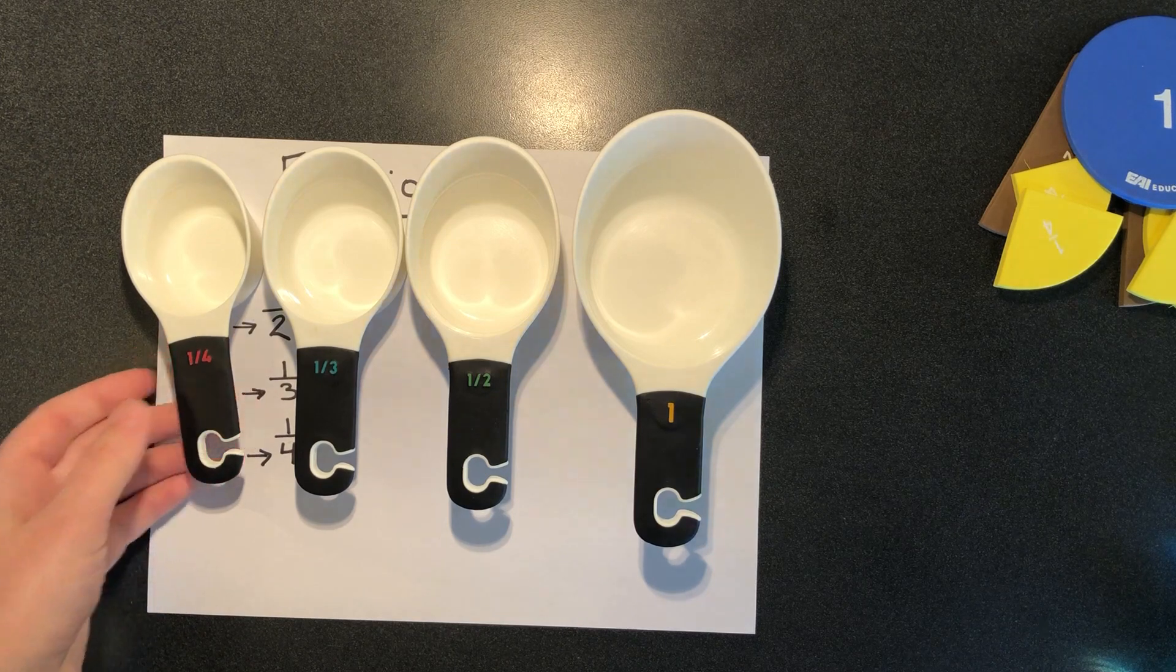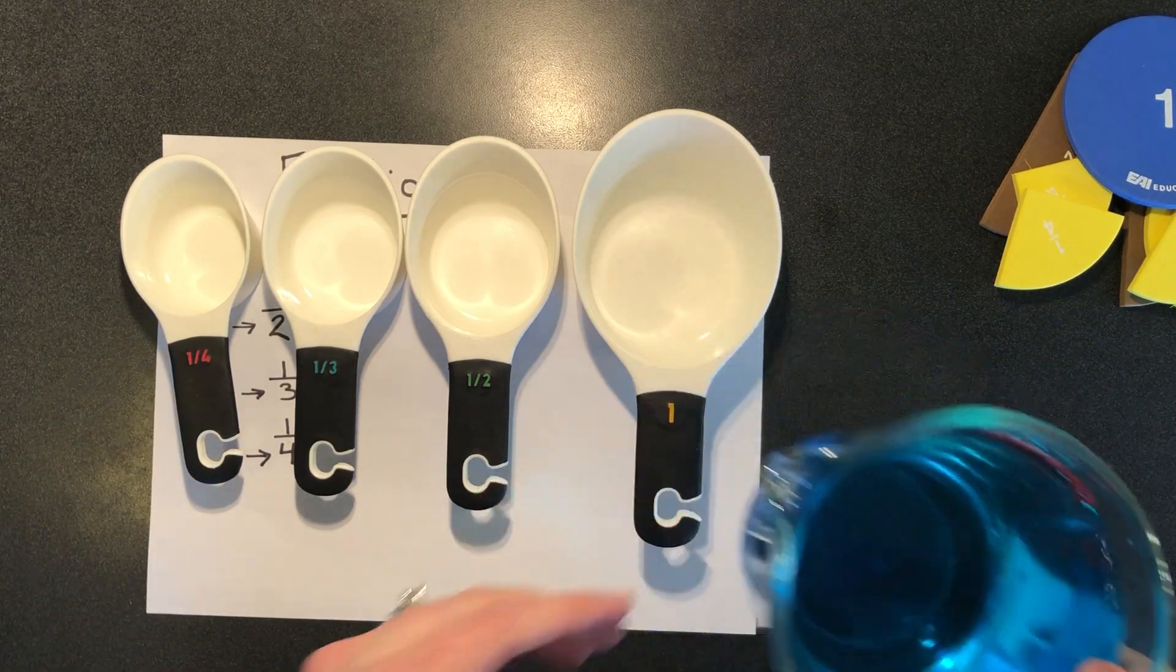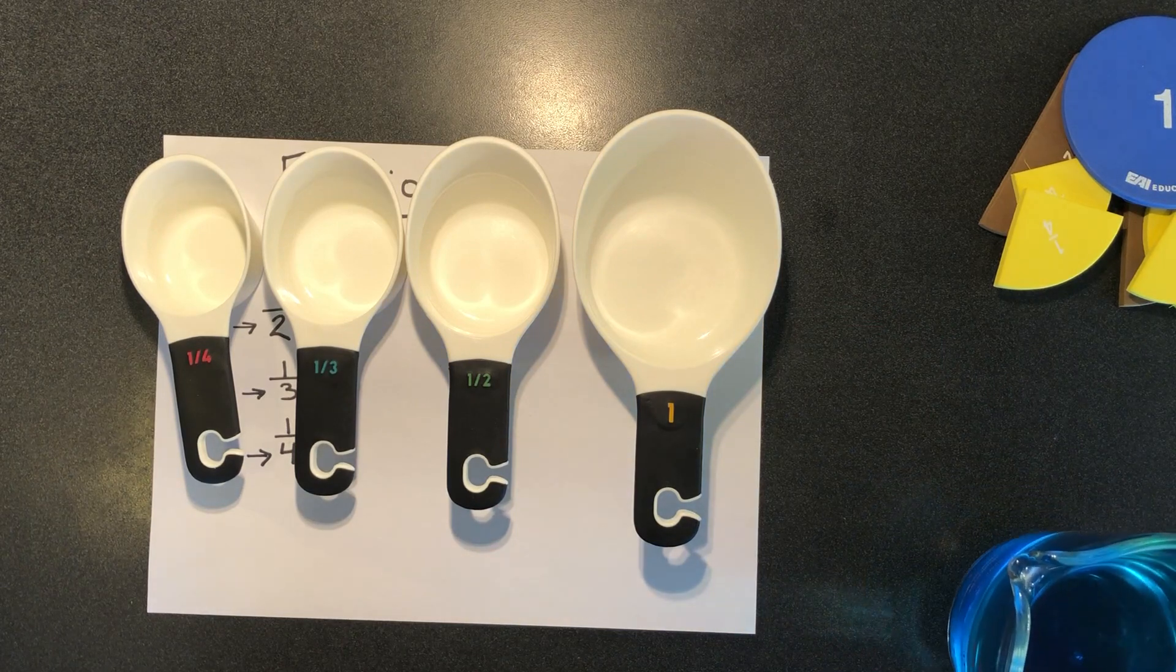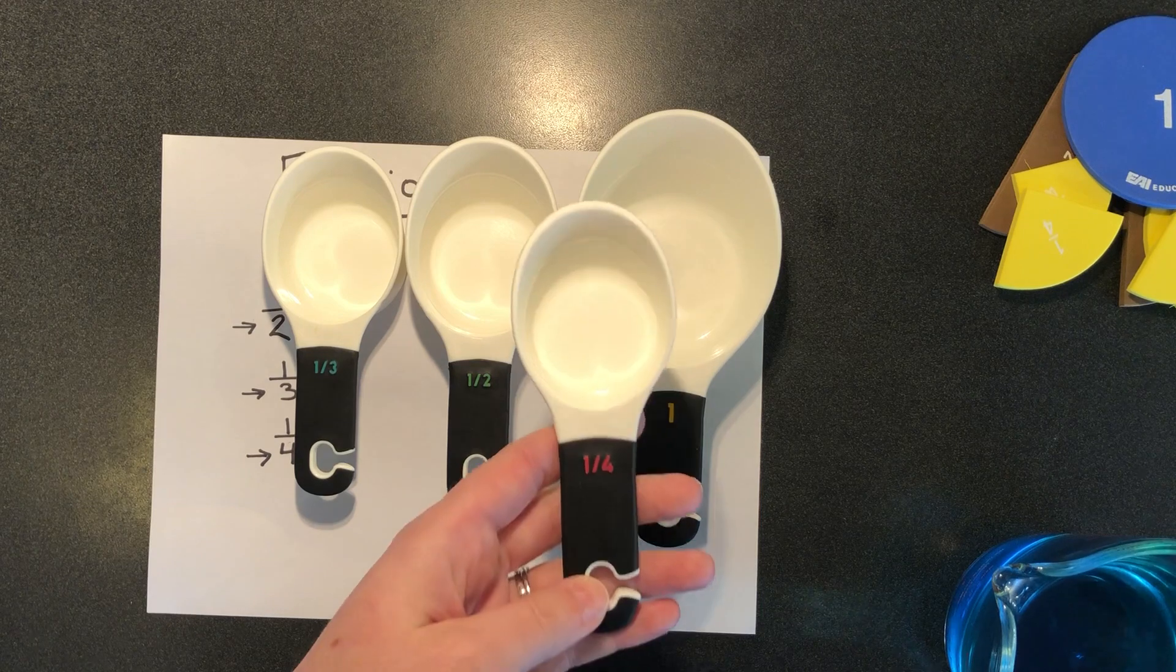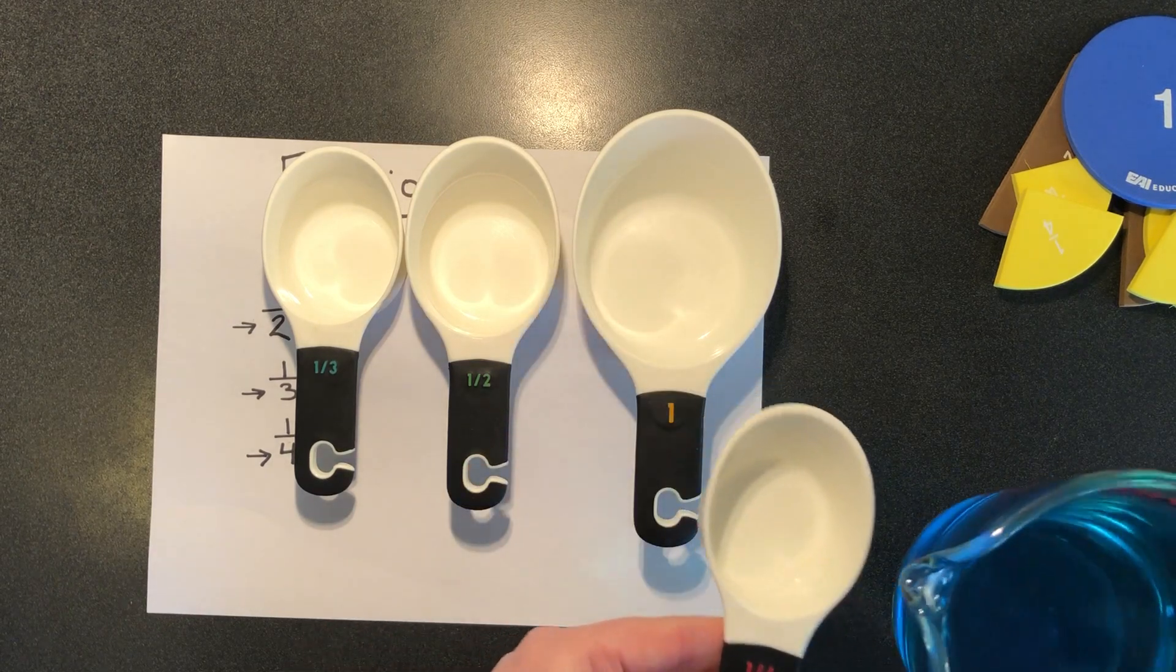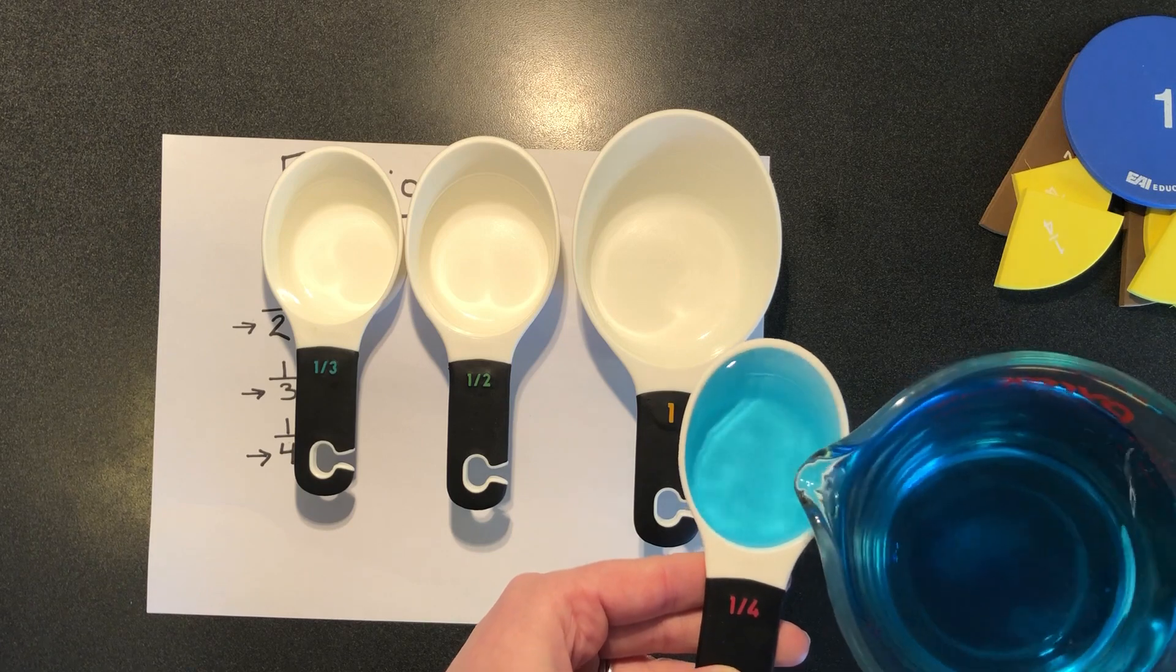So I took some water and I just poured some blue food coloring in it to make it a little easier for you to see. And I'm going to have you count with me. We're going to count by fourths. We're going to see how many fourths it's going to take to fill our one cup.